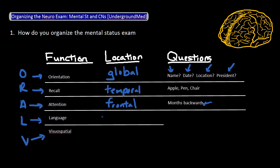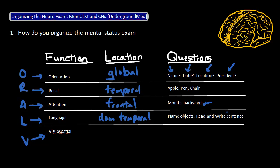Next is language, which tests the dominant temporal lobe. I like to test language using three tests. First, point to three objects such as a watch, pen, and shoe, and ask the patient to tell you what those objects are. Second, ask the patient to read a simple sentence out loud. And lastly, ask the patient to write a simple sentence for you.